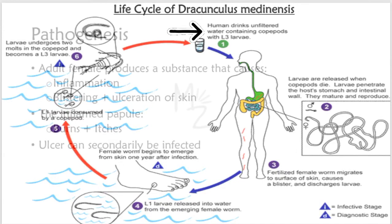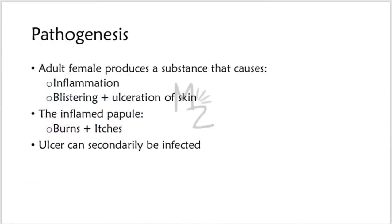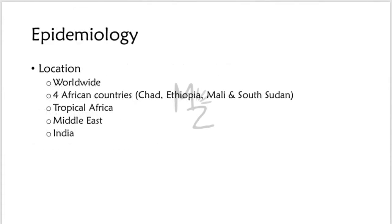Pathogenesis: the adult female produces a substance that causes inflammation, blistering, and ulceration of the skin — usually the lower extremities, for example the foot. The inflamed papule burns and itches, and the ulcer can become secondarily infected.